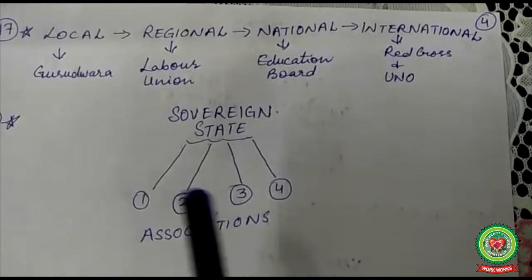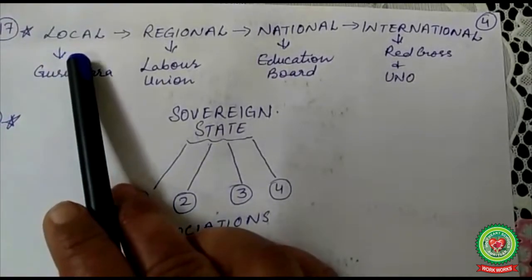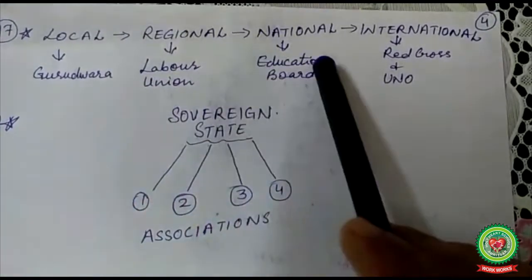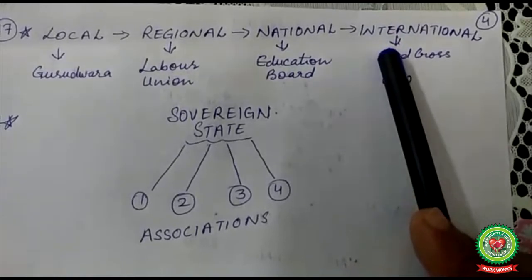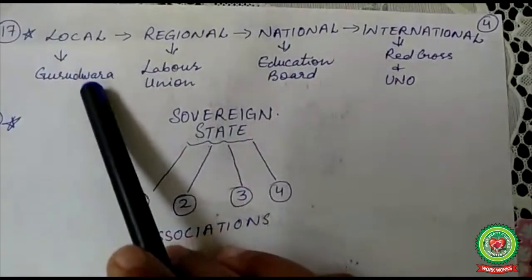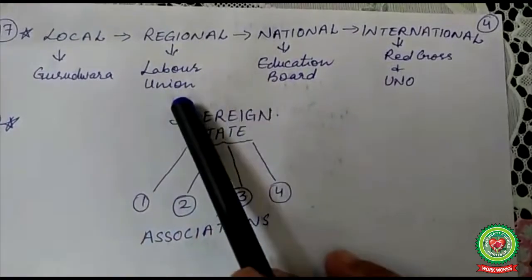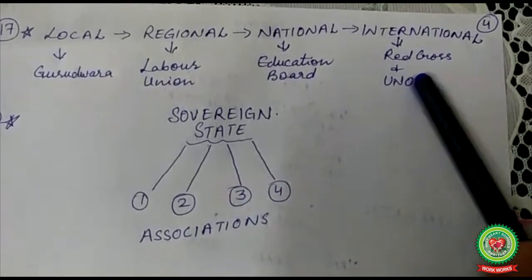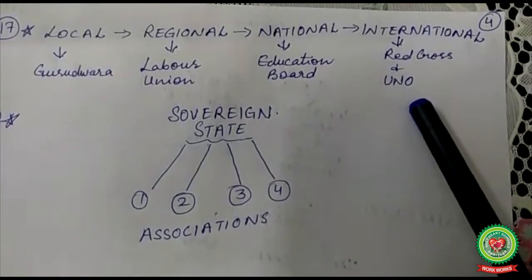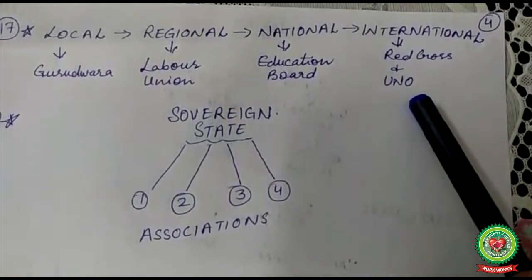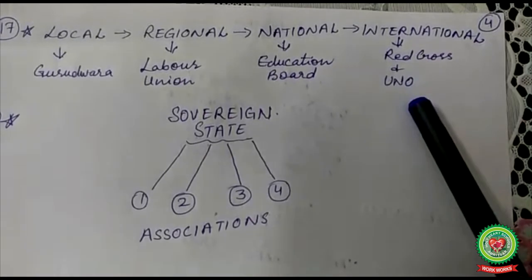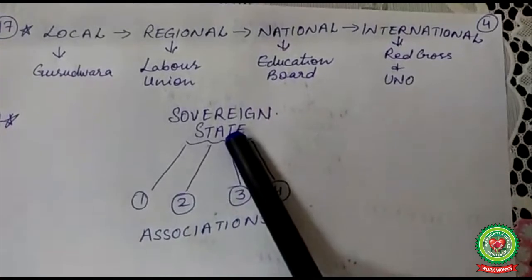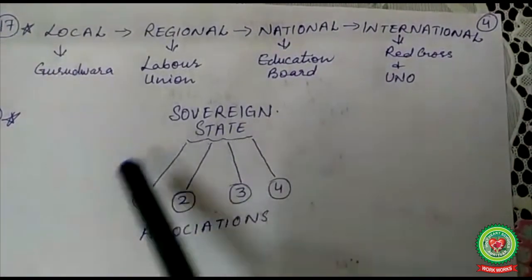The status of the state is national, but the status of an association can be local, regional, national, or international. For example, a gurudwara committee is local, a labor union can be regional, an educational board is national, and the Red Cross Society or the United Nations Organization is international. So an association can be of any level.